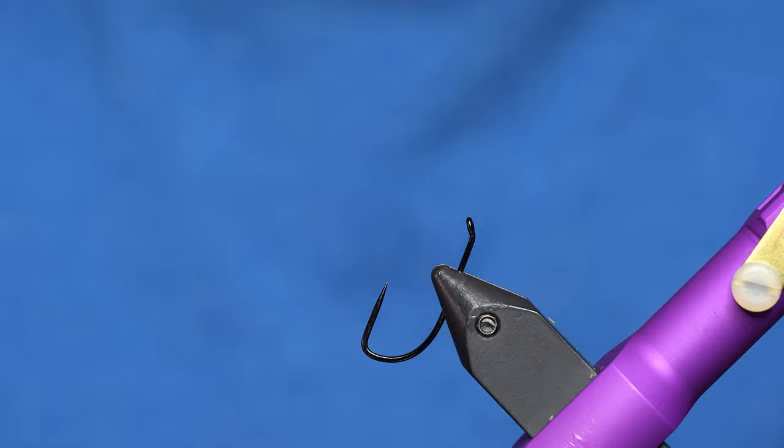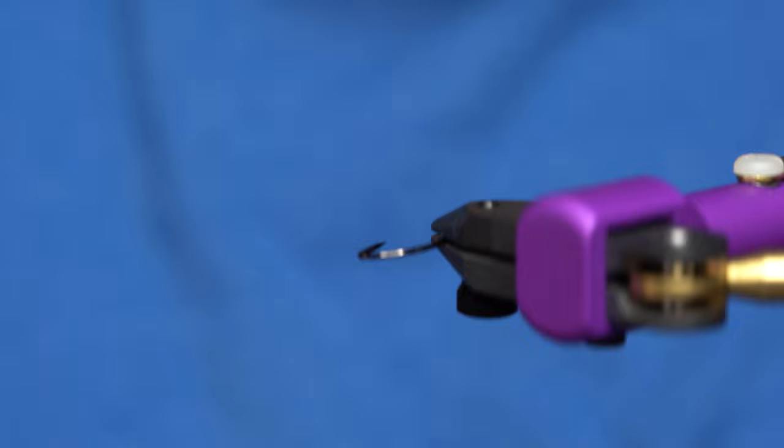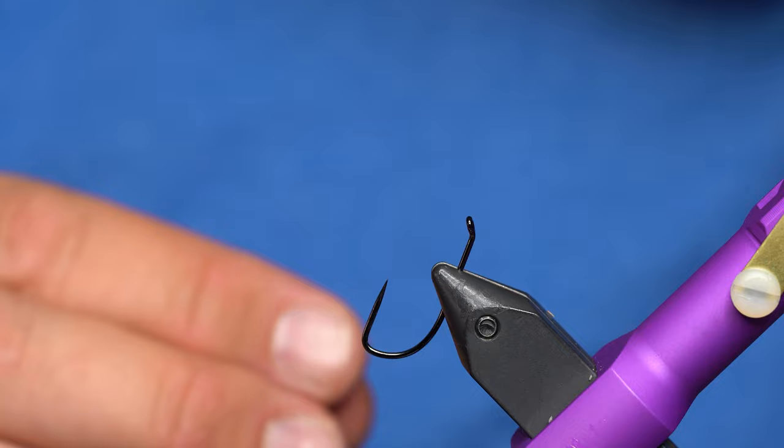Alright, so this is kind of a crazy hook. This is the XC290 from Umpqua. It's an awesome hook for streamers, for stillwater stuff. But as you can see, it's got a pretty crazy bend down at the end. I really like that because the hook point is so long and you can absolutely poke fish with this thing.